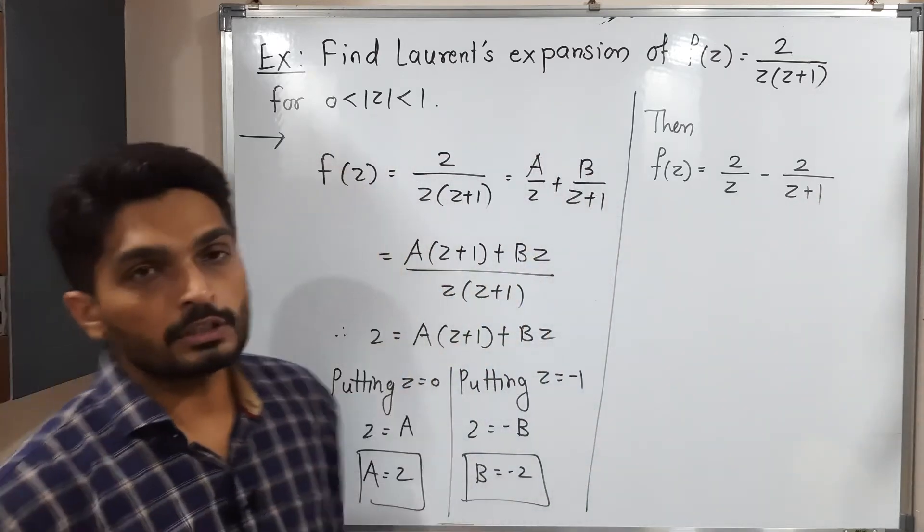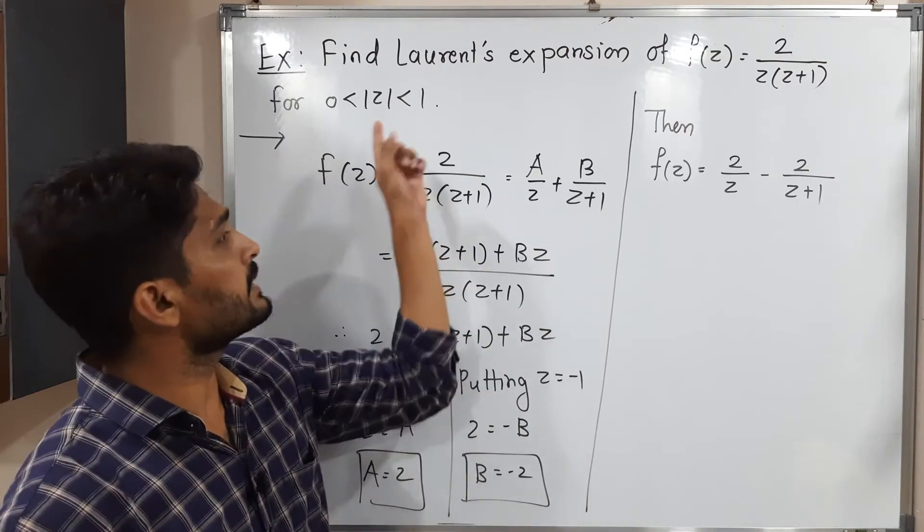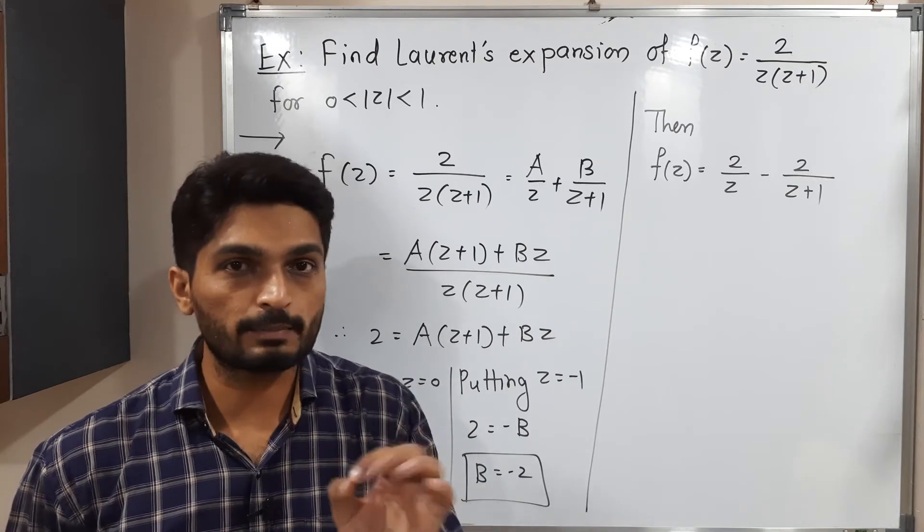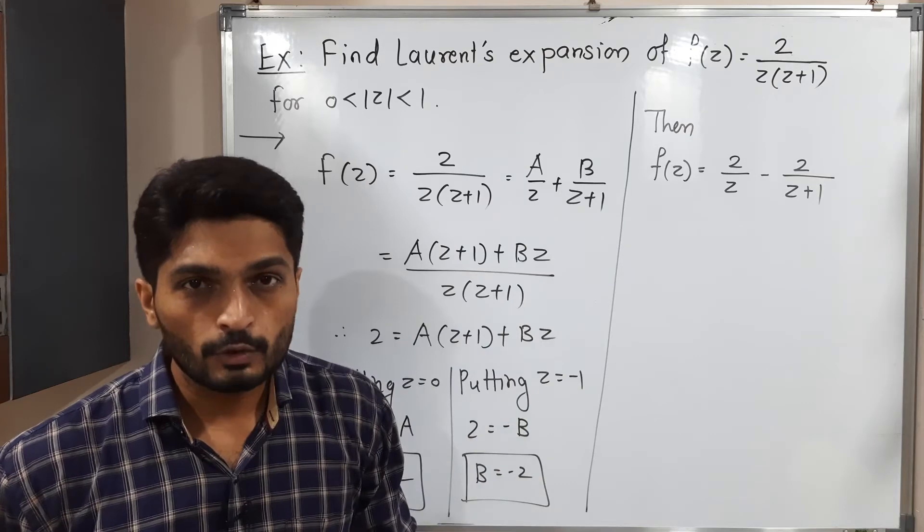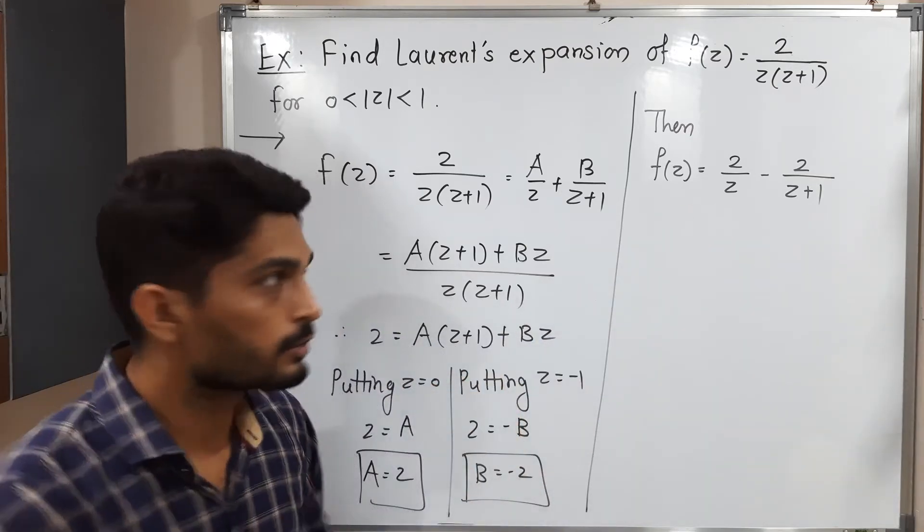The given region is 0 less than mod z less than 1. Only z is there, so we expect z only, not z minus z0. For the first term, we directly have z, so no need to worry. We have to work only on the second term.